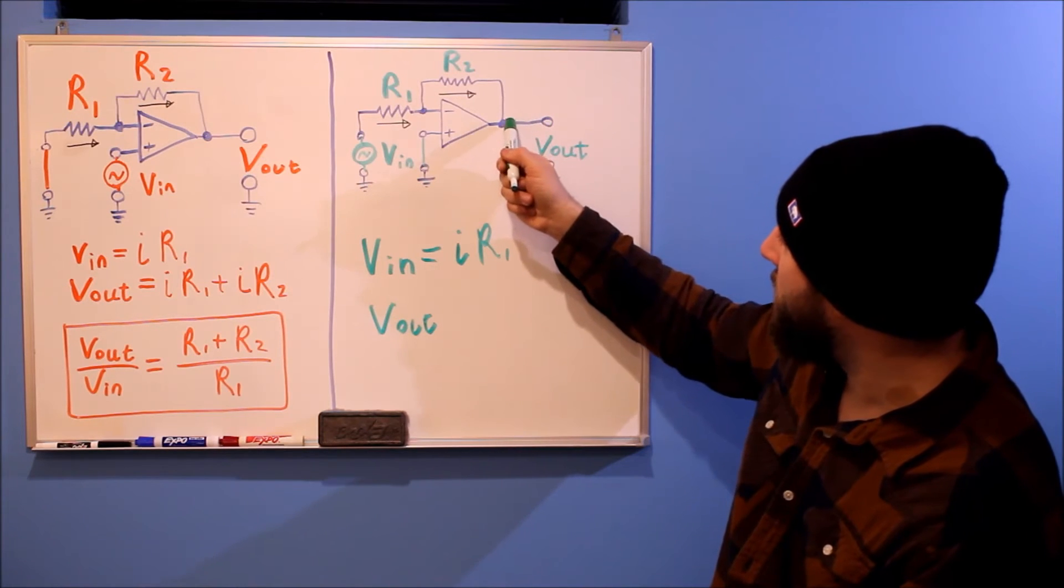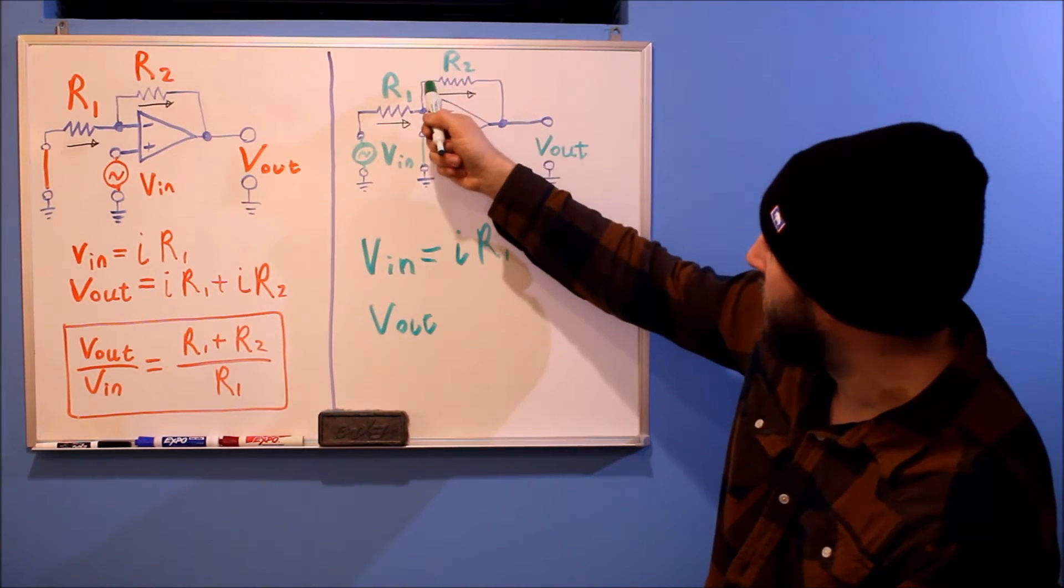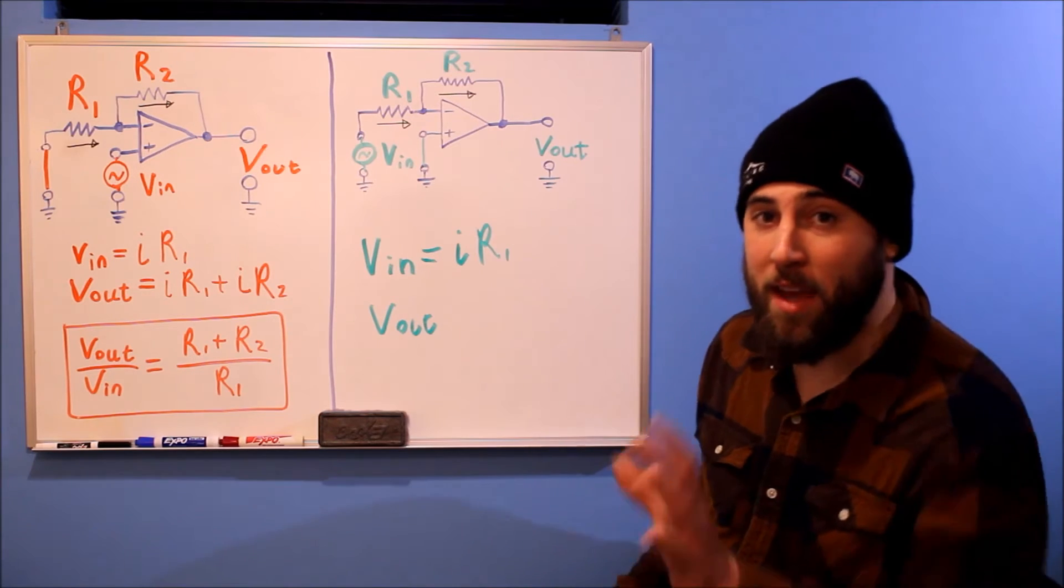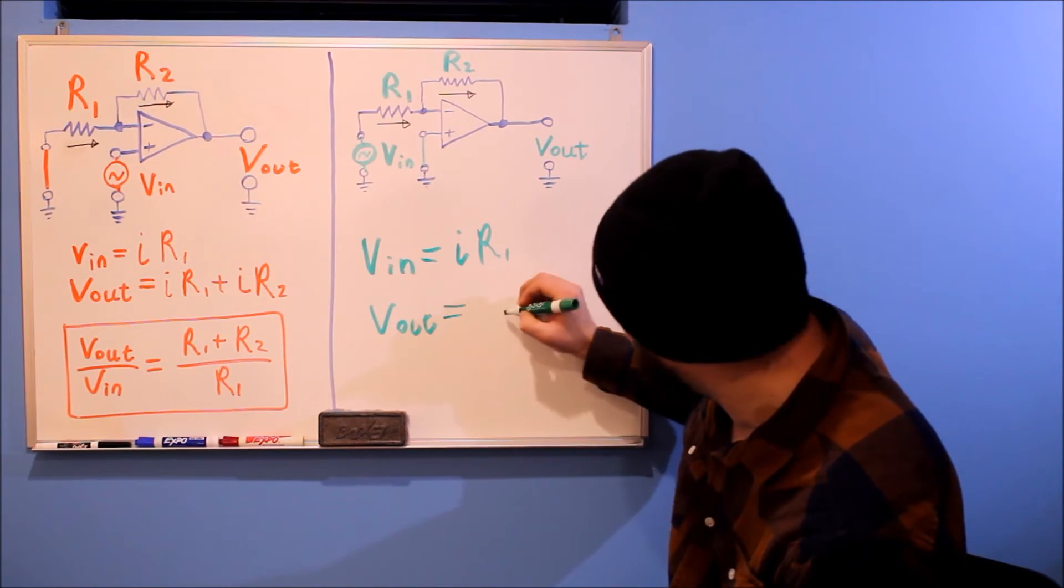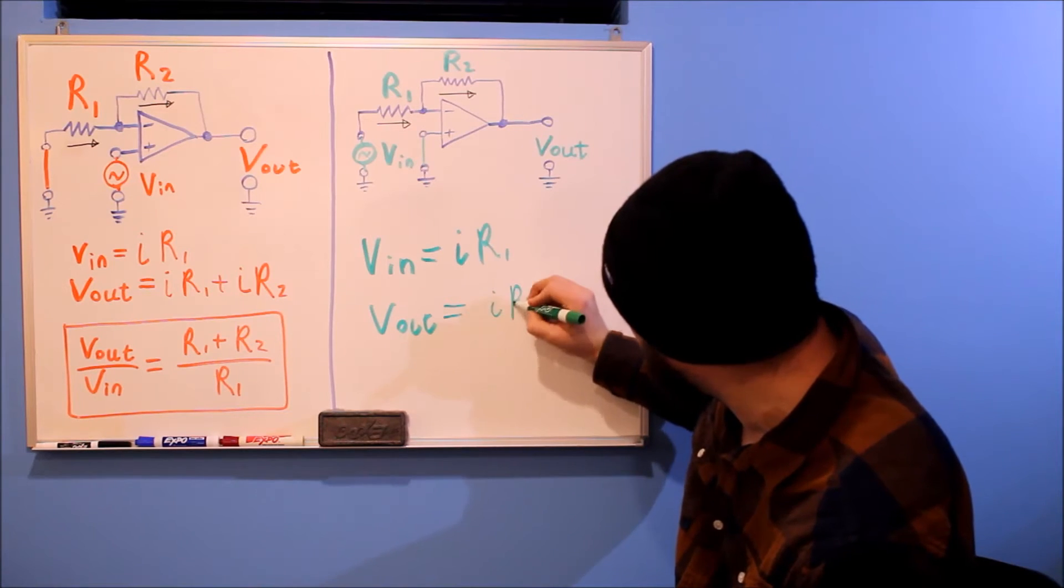Now let's look at Vout. Vout, if we follow the path through R2, we end up at the inverting input, and again, we are at ground. So this is equal to I R2.